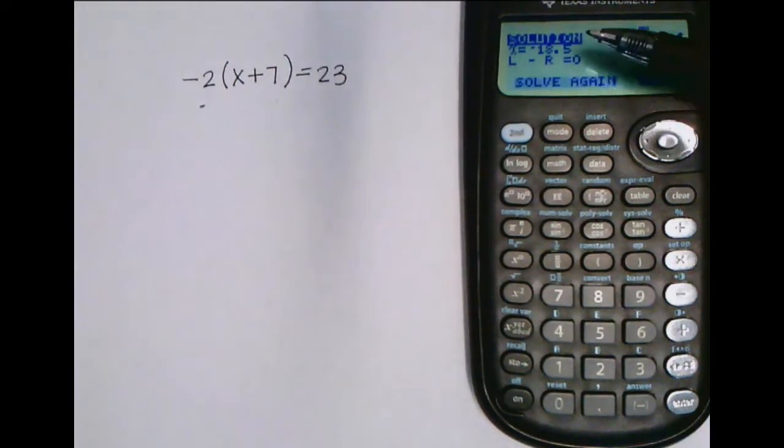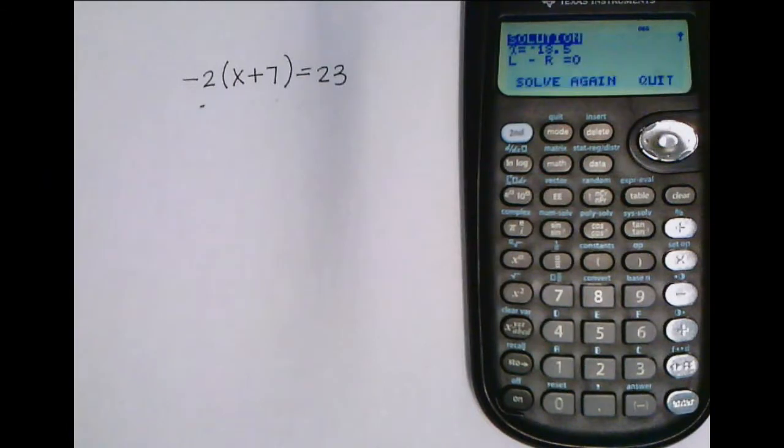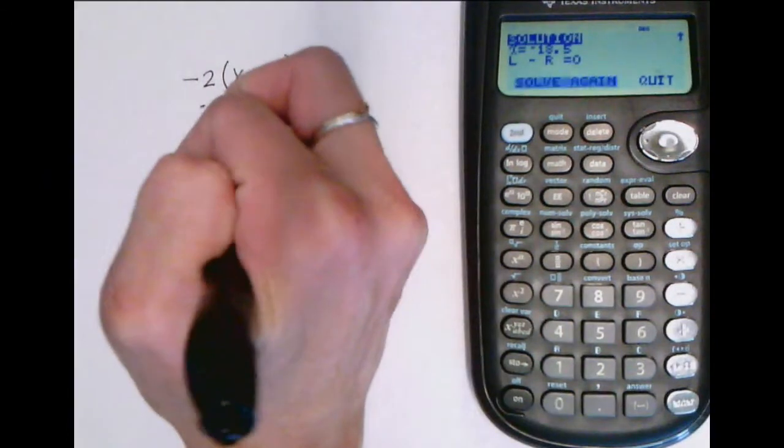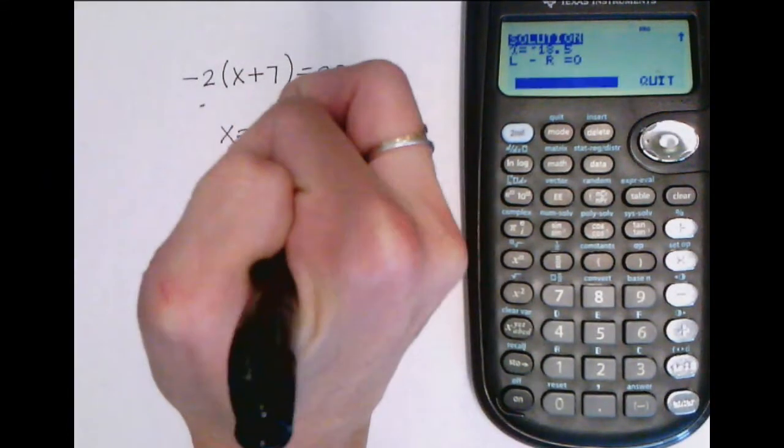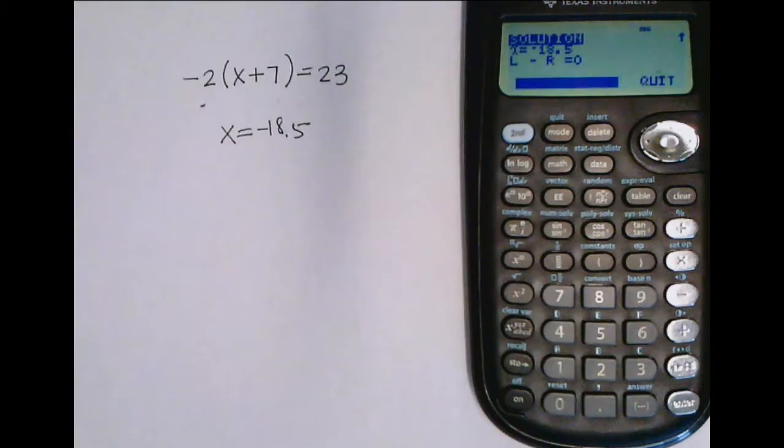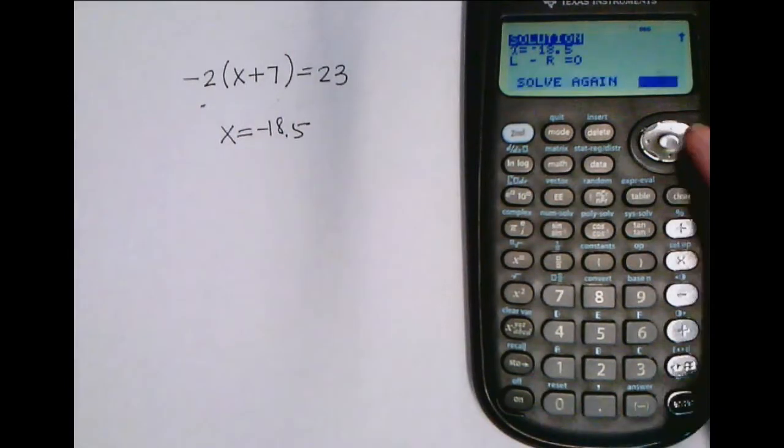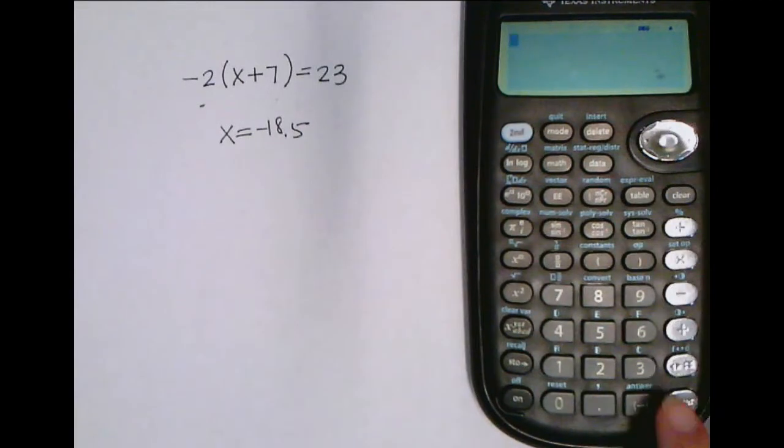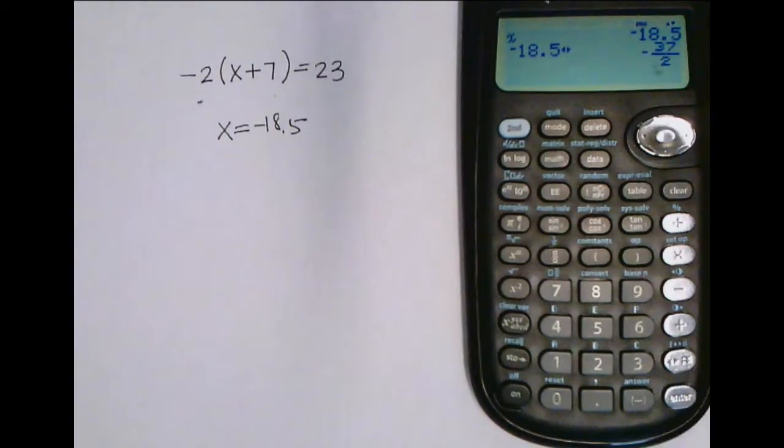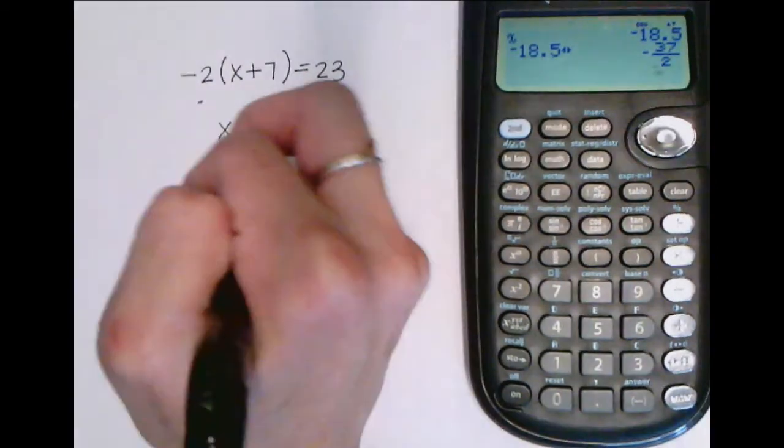So, it says the solution is that x is equal to negative 18.5. Perfection. Quit. So I wonder if it actually replaced my x. Yep, so now it says x is 18.5 because that's what I was solving for. I could even turn that into a fraction so that I am a very happy teacher.